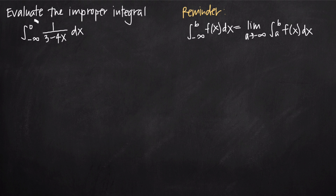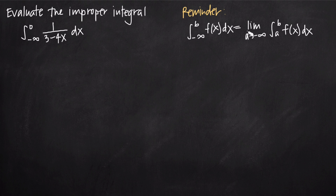When we have Case 2, the formula we need to remember is that the integral of some function f(x) on the limits negative infinity to some constant b is equal to the limit as a approaches negative infinity of the integral of that function on the limits a to b. All we're doing is taking our original integral and swapping out negative infinity for a. We do that because we can't plug negative infinity directly into our function — we have to plug in some constant a, then take the limit as a approaches negative infinity. That's the only mathematically correct way to evaluate at an infinite value.